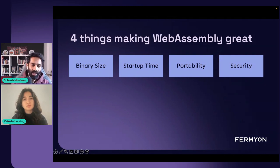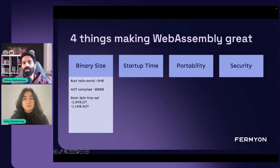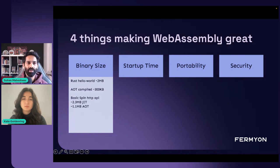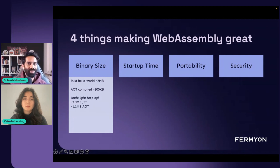The first is binary size. With the lens of energy efficiency and sustainability, binary size makes such a big difference when you're doing software at scale — deploying to millions of users or thousands of applications. Reducing your binary size makes a huge difference. To give you a benchmark: a simple Rust Hello World written using WebAssembly is only about 2 MB. And if you compile it ahead of time to assembly-level code when you know the OS and details beforehand, you can reduce that to around 300 KB — a very small file.